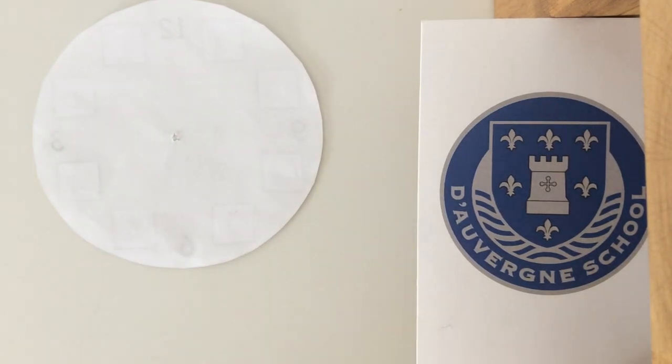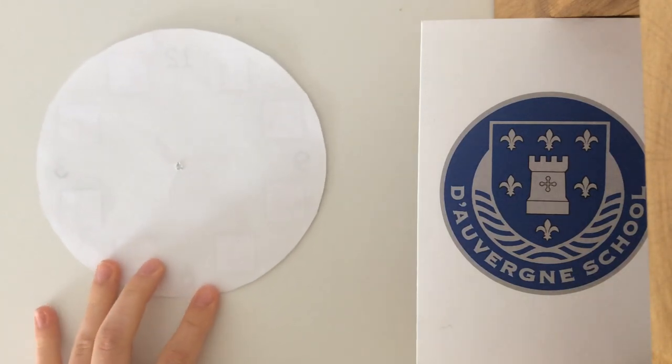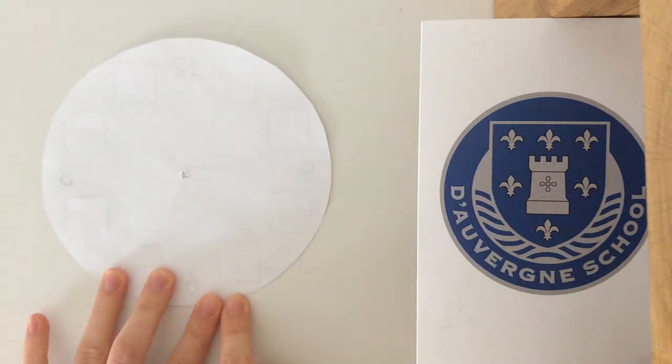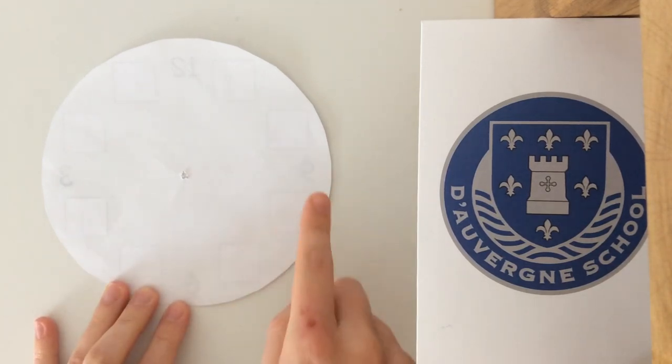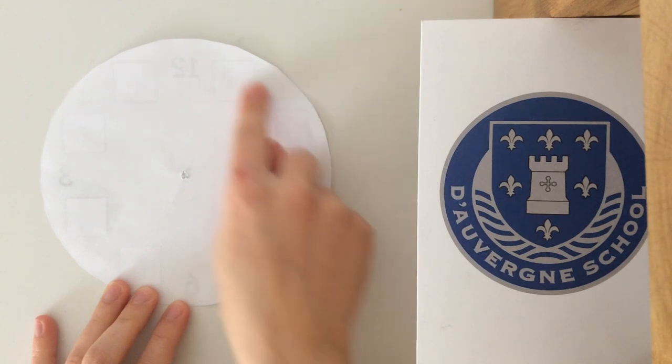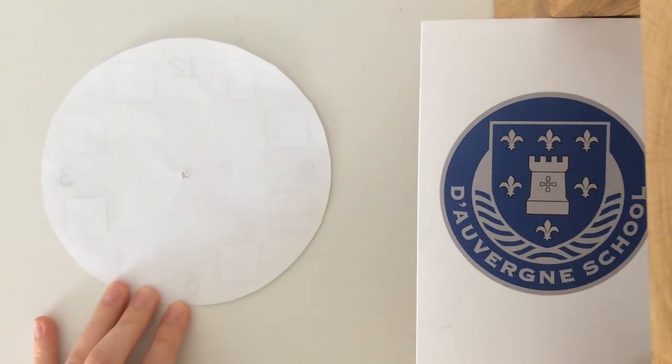You're going to use something circular from around your house, so it might be a plate or a bowl to draw around so that you can cut yourself out an even circle. Your circle needs to be big enough to fit our numbers of our clock inside and to be able to put our moving hands on it. I'm going to ask you to pause the video now whilst you do that.